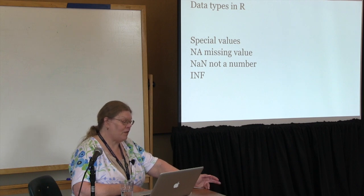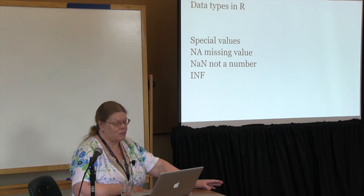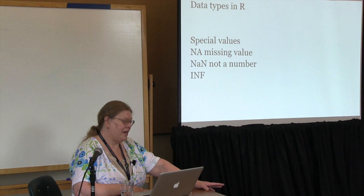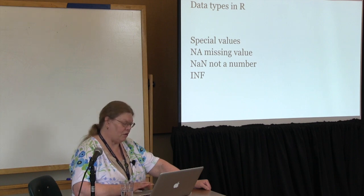R has special values. It uses NA for missing value, which is different than SPSS, which uses minus 9. NAN means not a number in R. When you get an INF return, it's basically telling you that you tried to do something impossible, like divide by zero.